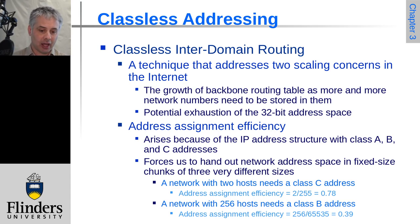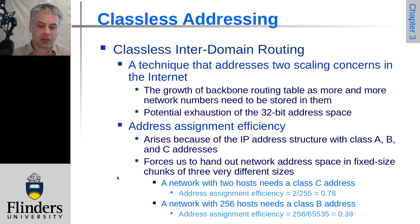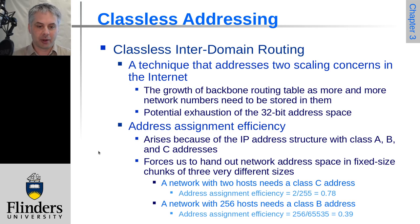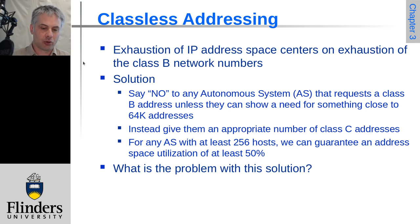Similarly, if you needed 80,000 addresses you'd get a class A. But class A and class B addresses got exhausted quite quickly, so organizations were getting allocated blocks of class C addresses. They needed a solution to improve this considerably — and that's what classless inter-domain routing was designed to address. Class B network numbers were the big problem, as medium and large organizations couldn't get them.